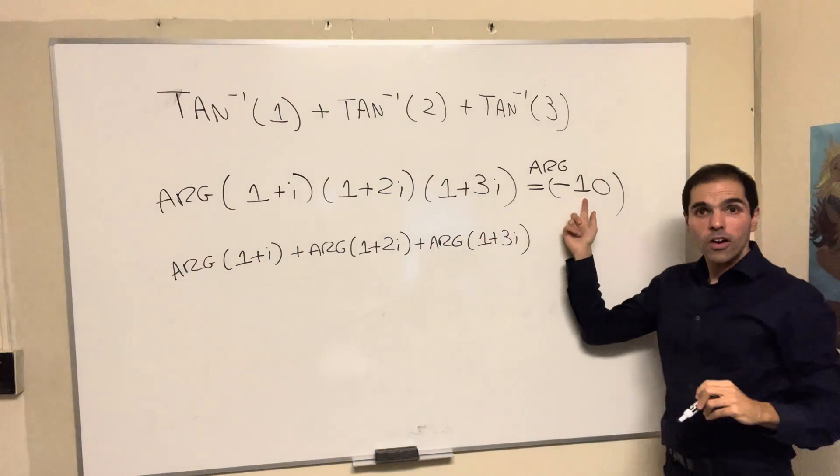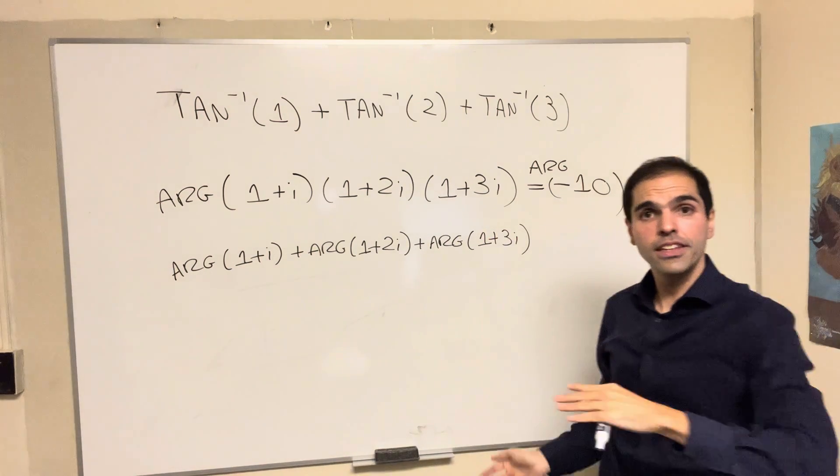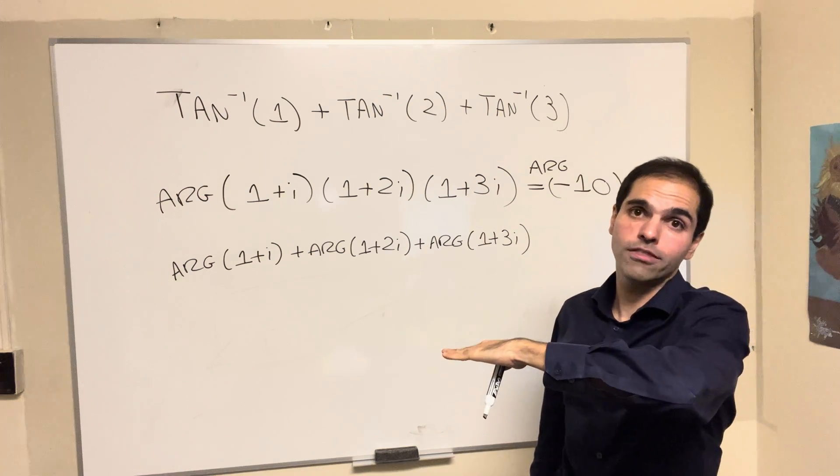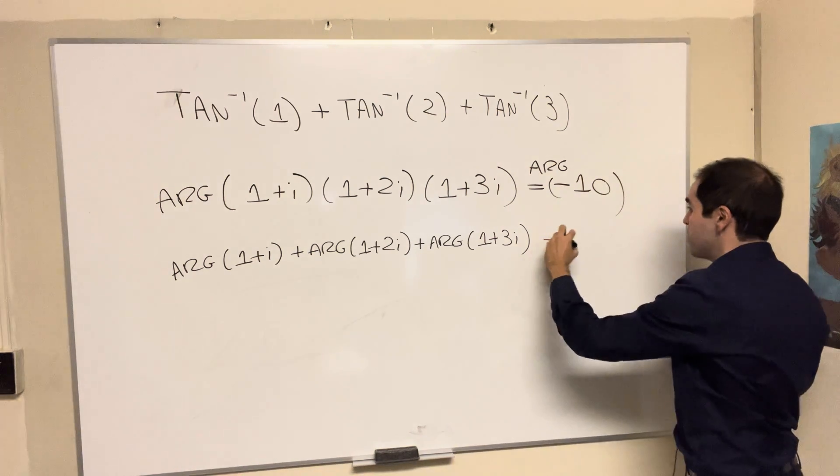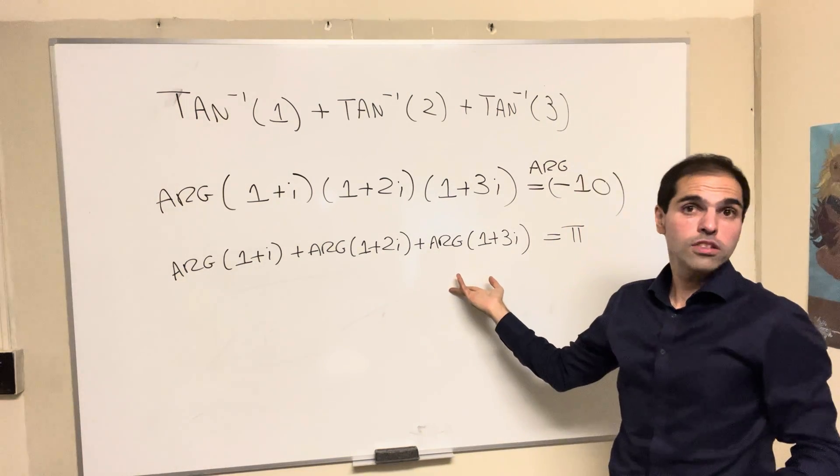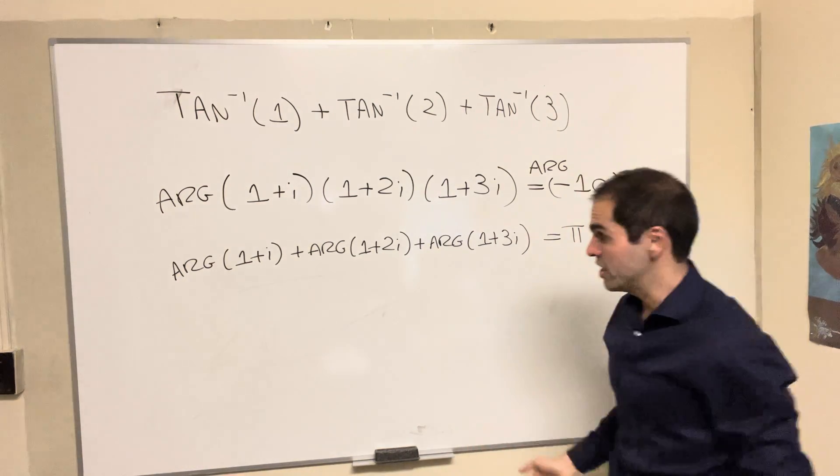Now, the argument of -10, it's the angle -10 makes with the positive x-axis. So in this case it's π. And for the rest, we just want to write this in terms of arctangents.